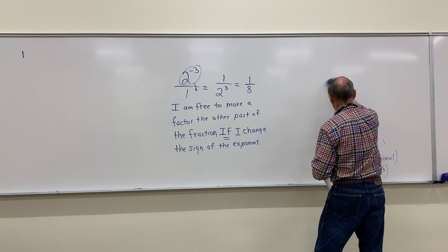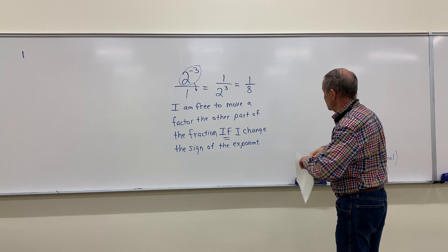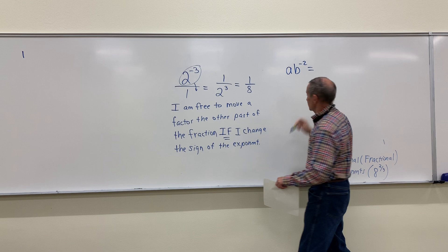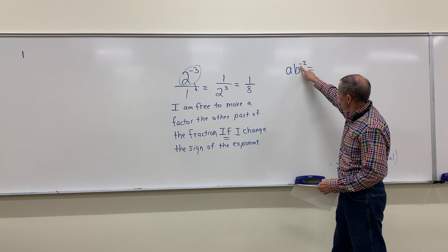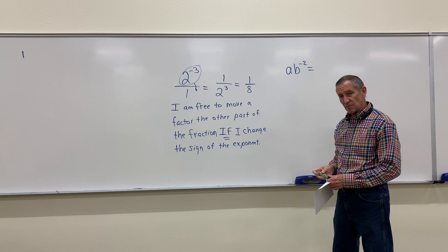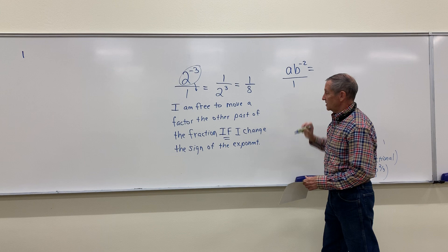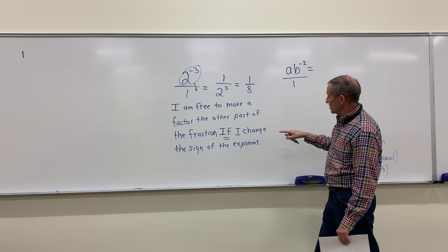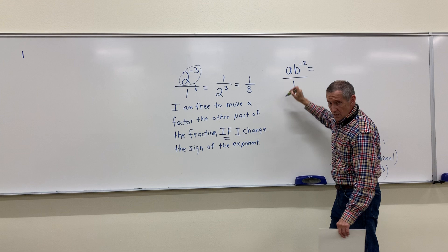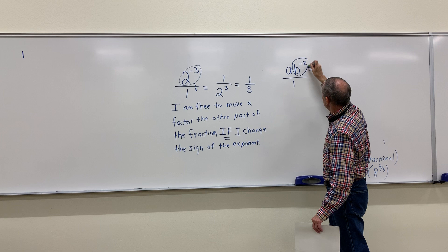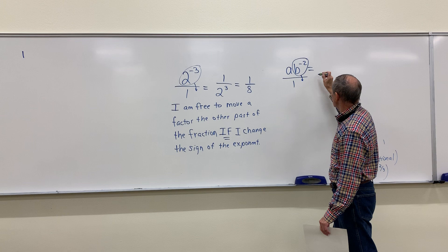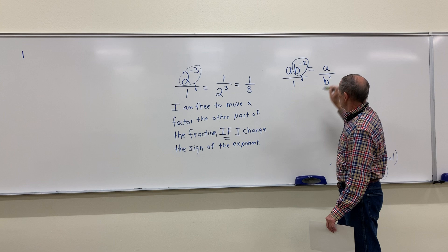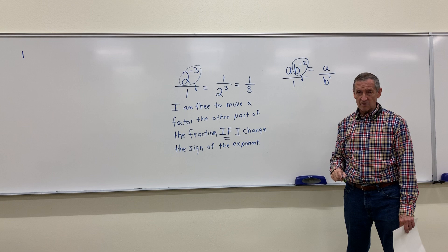Let's look at some expressions. You're going to be given something like A times B to the negative two and asked to simplify it. Why isn't it simplified? Because it has a negative exponent — as long as you have a negative exponent, you have work to do. Think of it as a fraction. I'm free to move a factor to the other part of the fraction if I change the sign of the exponent. Only B is to the negative power — A is well-behaved, B is the problem child. So B to the negative two moves to the denominator and becomes B squared, while A stays in the numerator. That gives A over B squared. It's simplified because all exponents are positive.